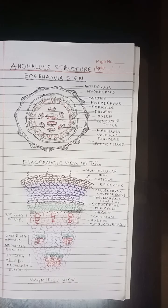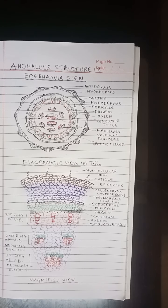Vascular tissue: the primary vasculature of the stem consists of a number of vascular bundles embedded in the ground tissue in three rings. This is the characteristic feature of Boragia stem — the presence of vascular bundles in three rings.